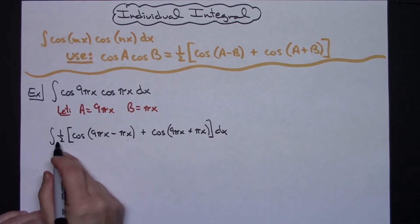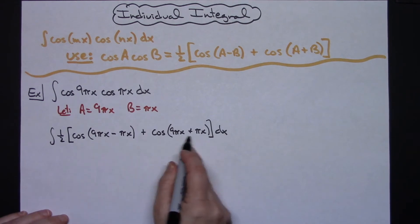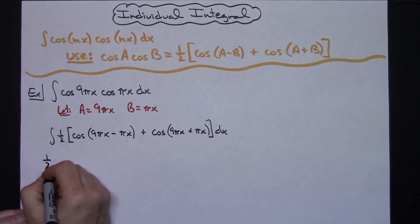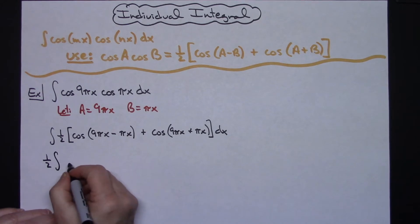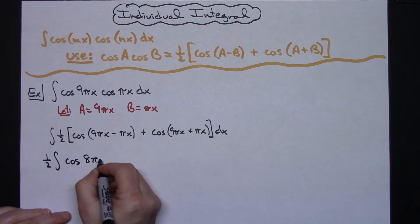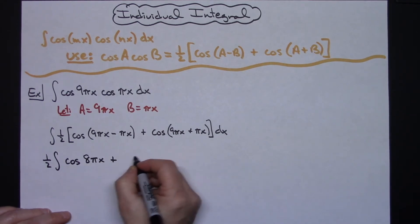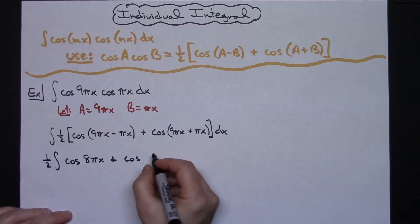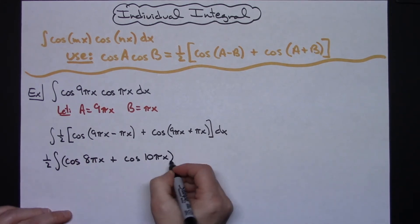I'm going to pull the one half out and do the subtraction and addition inside. I'll have one half times the integral of cosine 8πx plus cosine 10πx dx.